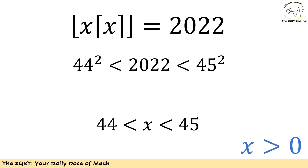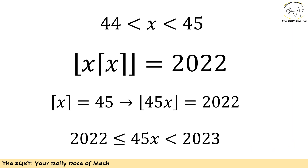To discuss the solution, I'll divide it into two parts. First, note that x is not going to be zero, so I'll divide into positive and negative values. For positive values, we have floor(x) × ceiling(x) = 2022. We already know that 2022 is between 44² and 45², so x needs to be between 44 and 45.